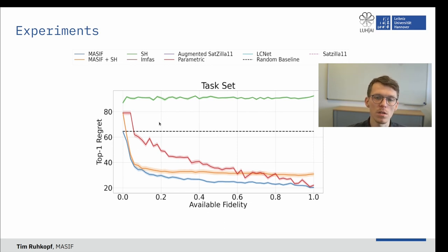We measure using top-k regret, that is, how much test performance we lose for a new dataset, if we choose the predicted best-k algorithms and train them fully against the actually best algorithm.